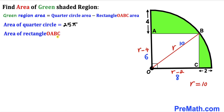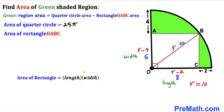Now let's calculate the area of rectangle OABC. The area equals 8 times 6, which gives us 48 square units.